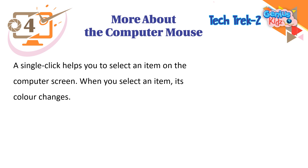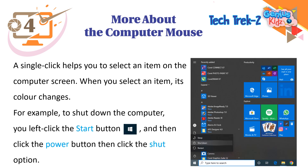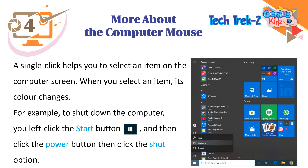When you select an item, its color changes. For example, to shut down the computer, you left click the start button, then click the power button, then click the shut option.